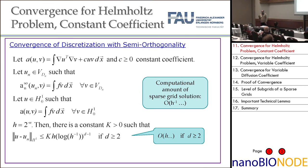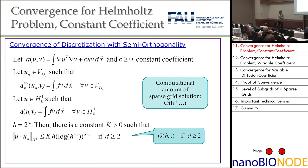Now let's go to theory — showing that the variational crime is not a big crime. For constant coefficients applying semi-coarsening, we get the standard convergence theory well known for sparse grids. The computational amount for solving the linear system is O(h⁻¹) with some logarithmic terms, and the H¹ error is O(h) — the same as a full grid. Semi-orthogonality comes for free because we use pre-wavelets.